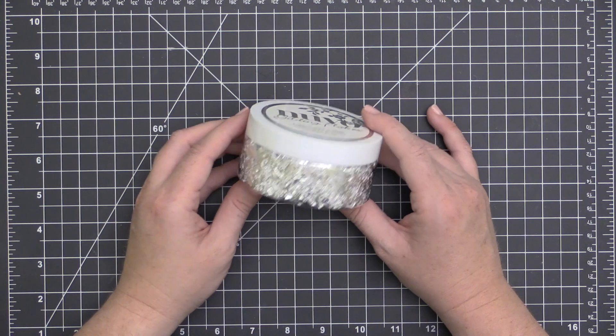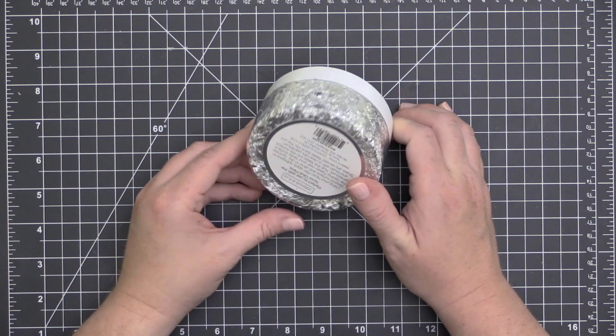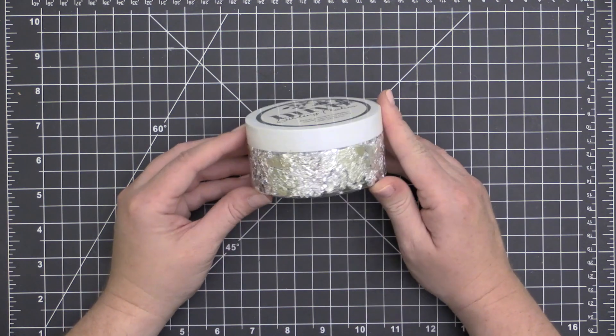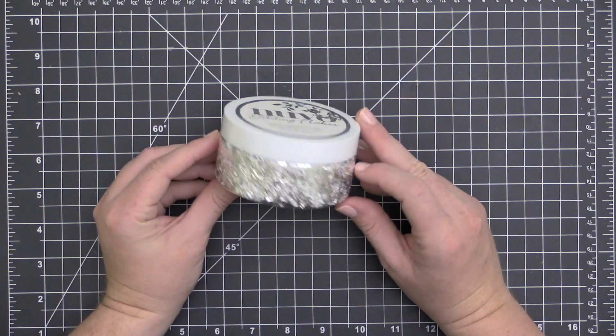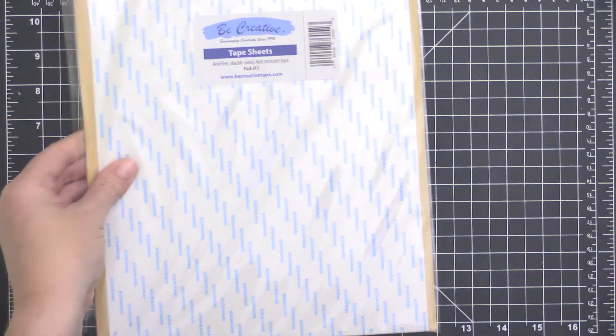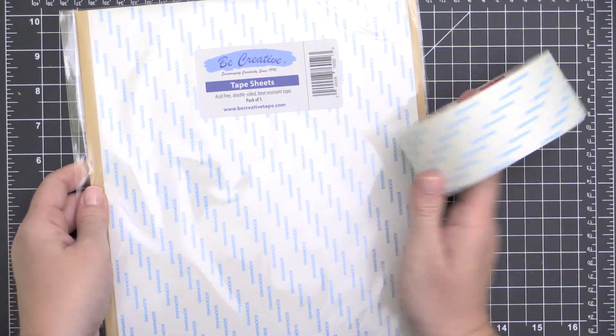Now for my faux tin or aluminum today, I am using these Nuvo Gilding Flakes in Silver Bullion. Gilding Flakes have been on the market for quite some time, but they seem to be making a comeback this year, so I wanted to give you a few ideas for including them on your card projects.